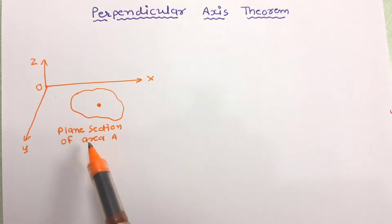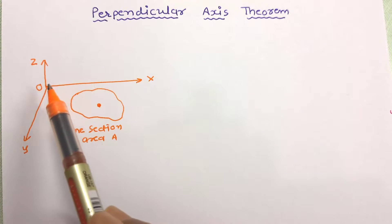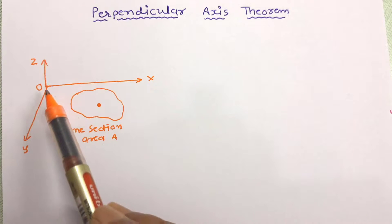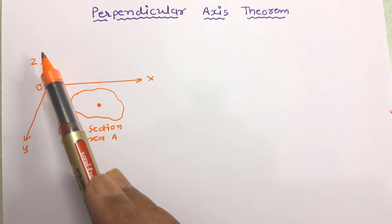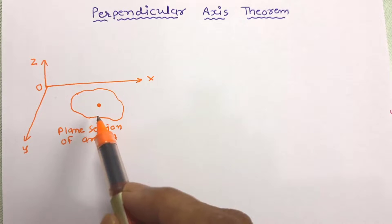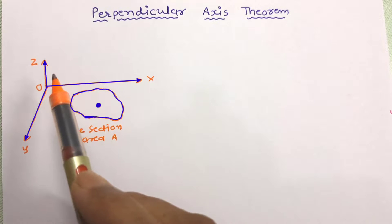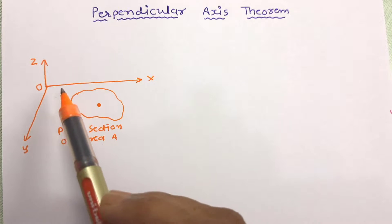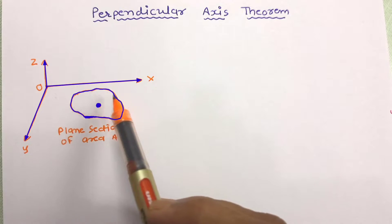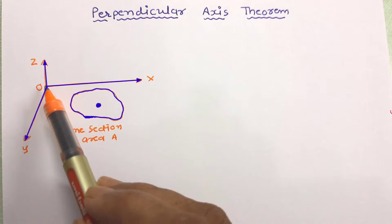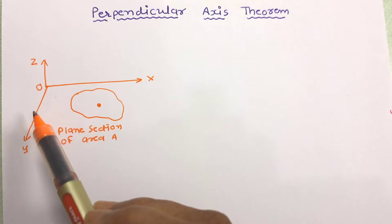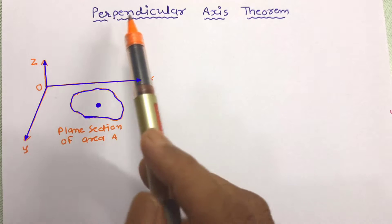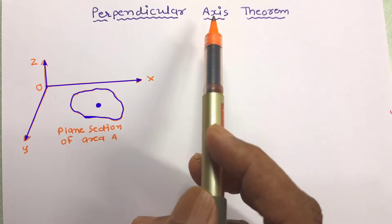Here, a plane section of area A has been given. There are three mutually perpendicular axes OX, OY, and OZ. Now if the moment of inertia of this lamina about the XX and YY axes is known, then the moment of inertia of this lamina about the axis ZZ, which is perpendicular to XX and YY, can be determined using the Perpendicular Axis Theorem.